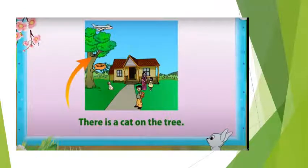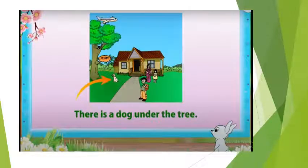There is a cat on the tree. On is a preposition. There is a dog under the tree. Now, identify the preposition in this sentence.